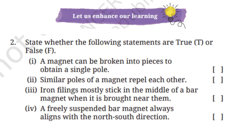Question 2: State whether the following statements are true or false. First: A magnet can be broken into pieces to obtain a single pole — this is false. You always get two poles; even the broken piece becomes a complete magnet with both north and south poles.